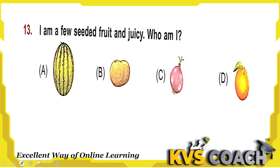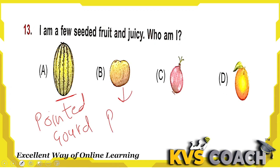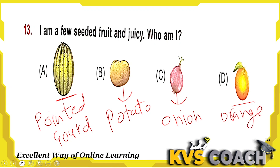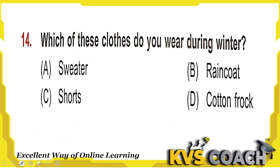Next: I am a few-seeded, juicy fruit — who am I? The first option is a vegetable, potato is a vegetable, onion is a vegetable. Orange is a fruit which is juicy and has many seeds. Option D — orange — is the right answer.